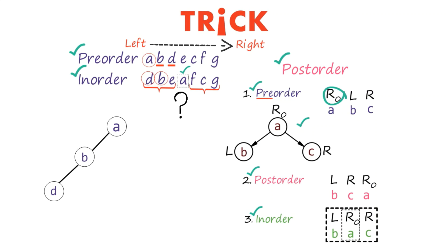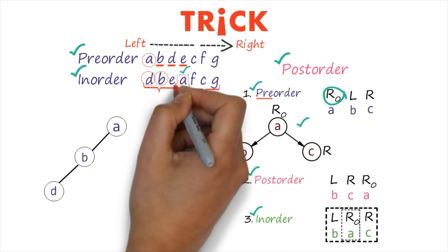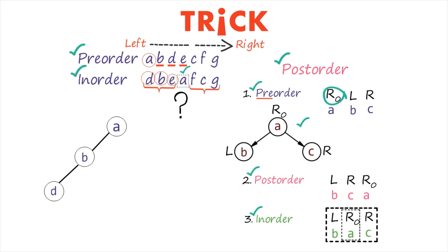Where should we keep E? According to the in-order traversal, E exists at the left side of the root. In the left of the root we have B, and in the left of B we have D. There is only one vacant location on the left side — that is the right child of D. So we will put E there. This is how we determine what position each node occupies.